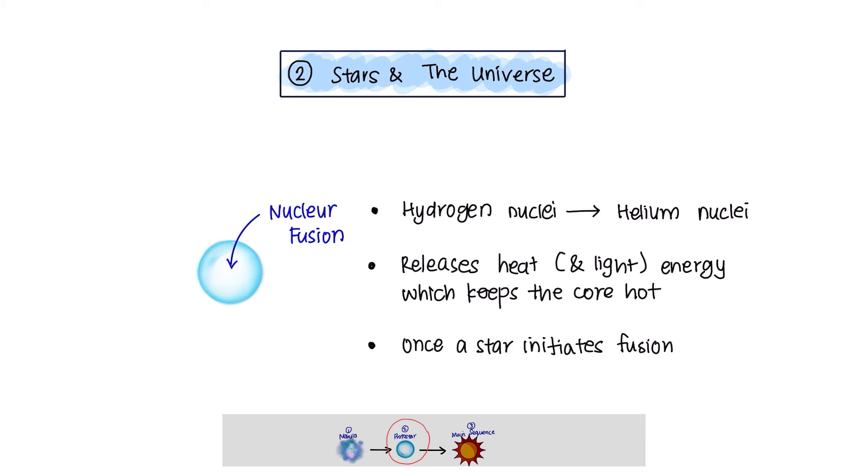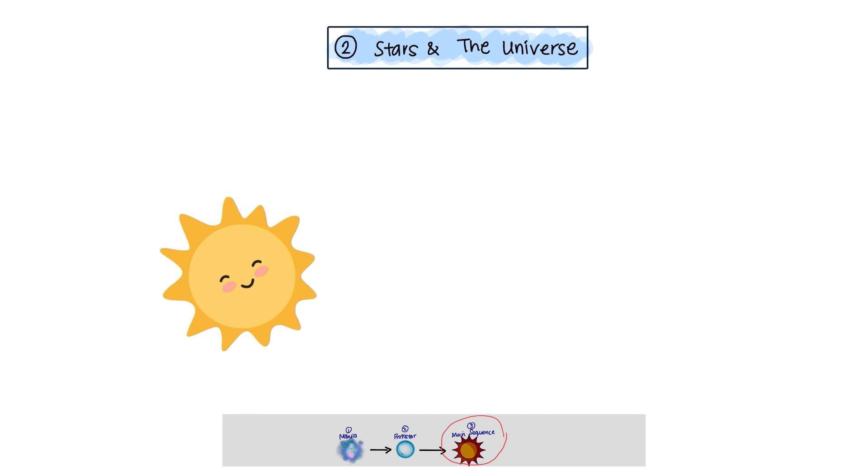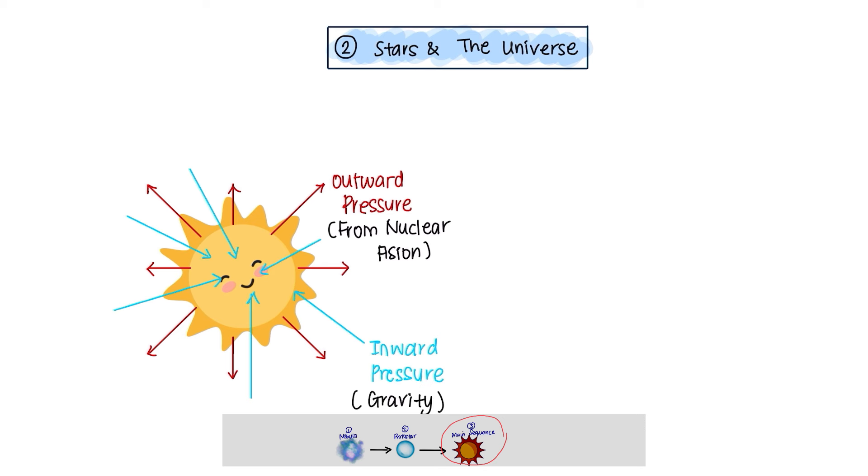Once a star initiates fusion, now it is known as a main-sequence star, which is a more stable star, like our Sun. While it is a main-sequence star, the outward pressure caused by nuclear fusion is perfectly balanced by the inwards pressure caused by gravity. Now, this can last up to a billion years and this is the stage where our Sun is currently in.